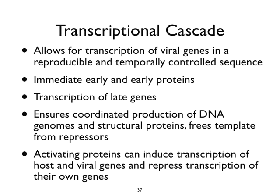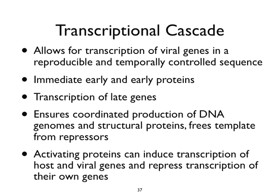This differentiates an immediate-early gene — one made right after virus infection — from an early gene, one made as a result of expression of a virus protein. These transcriptional cascades allow for transcription of viral genes in a reproducible and temporally controlled manner: Gene X is made, a period of time goes by, Gene Y is made, another period of time goes by, DNA replication ensues. We've differentiated between immediate-early and early proteins, and then we have transcription of late genes — some made at the beginning of DNA replication, some at the end.